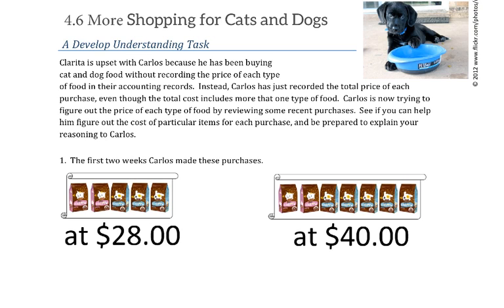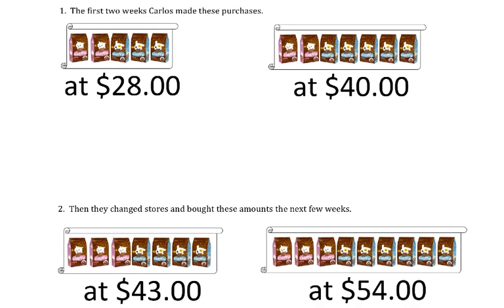Carlos is now trying to figure out the price of each type of food by reviewing some recent purchases. See if you can help him figure out the cost of the particular items for each purchase and be prepared to explain your reasoning. If you're doing this at home, try it on your own first. Pause it and try it.